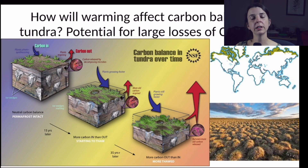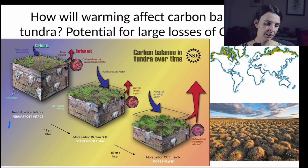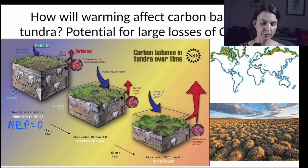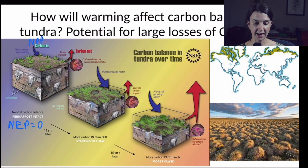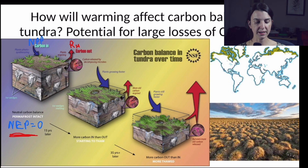The answer to this is currently unclear, but people think that the Arctic and the tundra, maybe 10 years or more ago, probably had an NEP of about zero. So the carbon coming in through NPP was about equal to the carbon going out due to respiration by heterotrophs, mainly the decomposers. And because these were in balance, we end up with a net ecosystem productivity, or NEP, of zero.